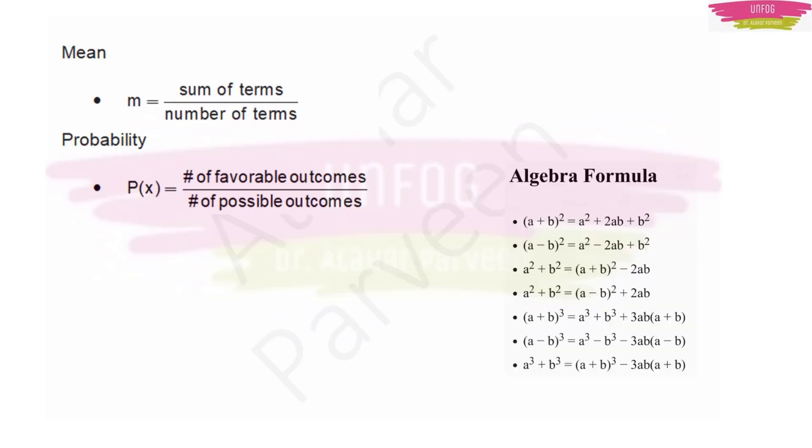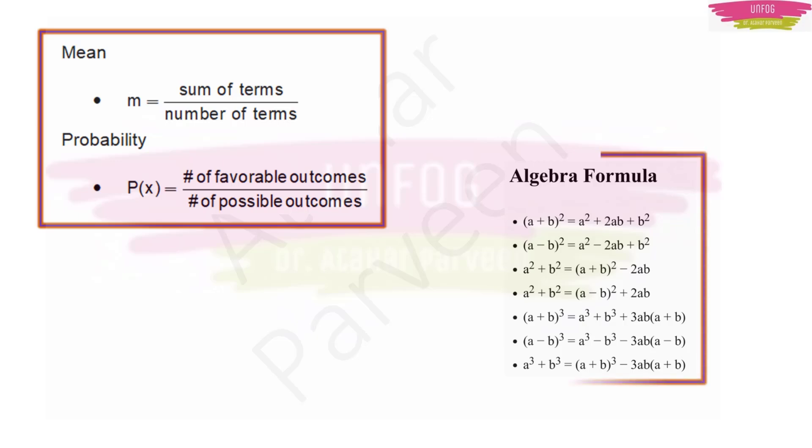Then we have this formula for mean, which is sum of terms upon number of terms. And for probability, you have number of favorable outcomes upon number of possible outcomes. And of course, we have this list of algebra formulas. Many more are there. I am giving you the easy ones here because I do not want to give you tension at this end moment. If you know more formulas than this, it is well and good. But if you do not know any formula, at least learn this formula list, till a³ + b³ = (a + b)³ - 3ab(a + b).